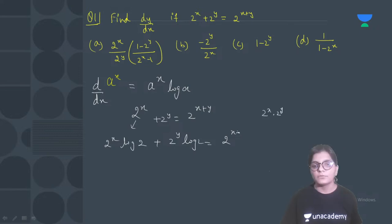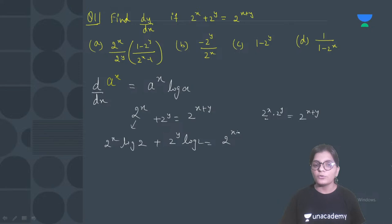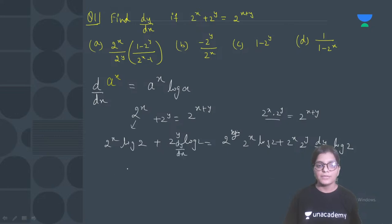Product rule will be applied. So in the product rule, for 2^x · 2^y, what do we get? We apply the product rule term by term. This gives us 2^x · log 2, and then for the second term: 2^x · 2^y · dy/dx · log 2. So collecting the dy/dx terms, we bring them to one side. This was a maths question — as I mentioned in the second video on effective exam strategy, BARC exam includes maths questions as well.